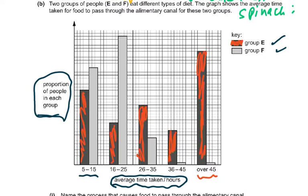Looking at group F, very few people had food taking a long time; most of them passed food through in 16 to 25 hours, and some in 5 to 15 hours. The graph tells you which group's food is taking longer. Spend time understanding the graph before reading the question and answering it.